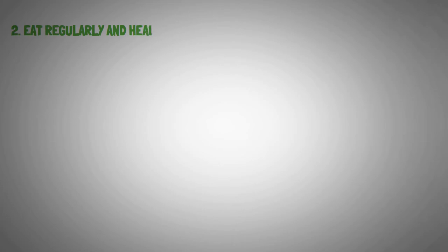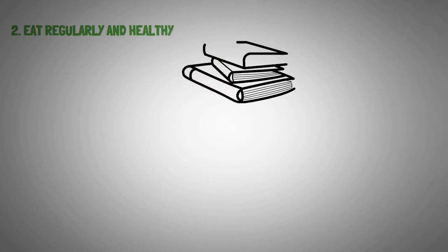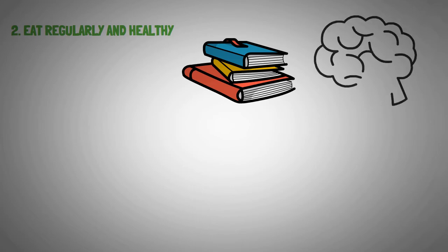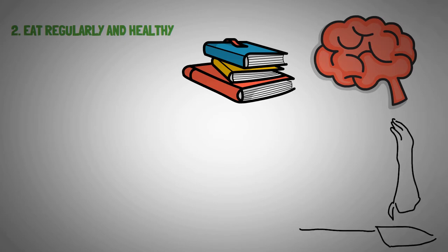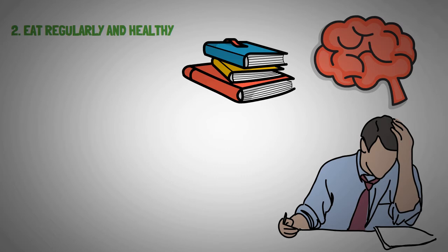Number two, eat regularly and healthy. Studies have shown that low blood sugar often weakens a person's resolve. When you are hungry, your ability to concentrate suffers as your brain is not functioning to its highest potential. Hunger makes it difficult to focus on the task at hand, not to mention making you grumpy and pessimistic.